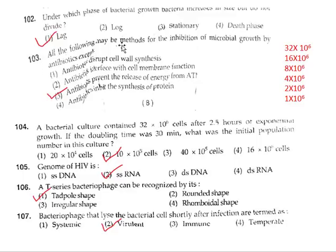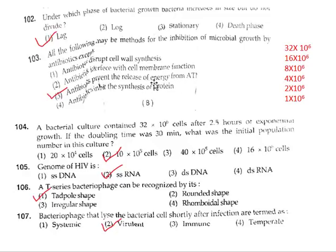Question 103: All of the following may be methods of inhibition of microbial growth by antibiotics except option 3. Antibiotics preventing release of energy from ATP is wrong, because there is no such antibiotic that stops ATP release. So the correct answer is option 3.